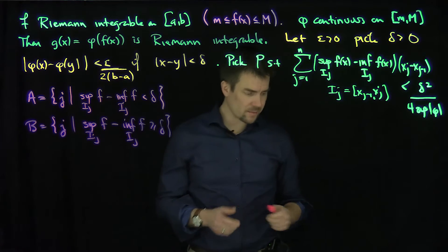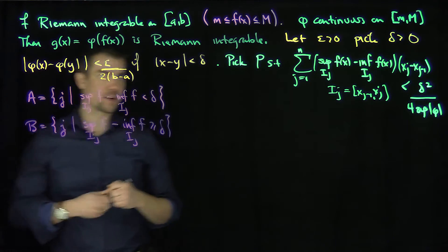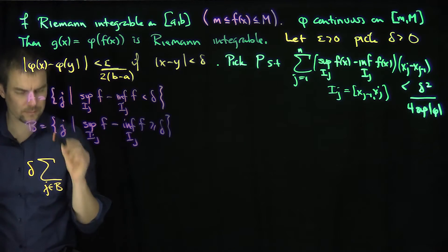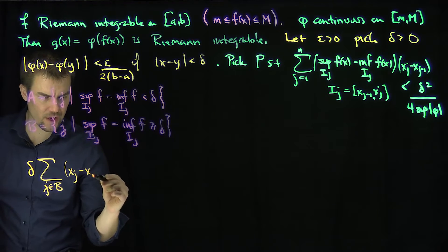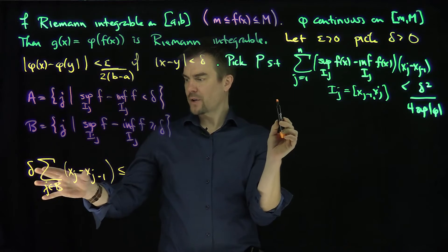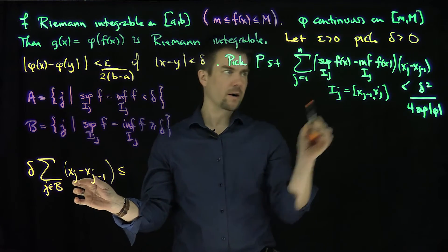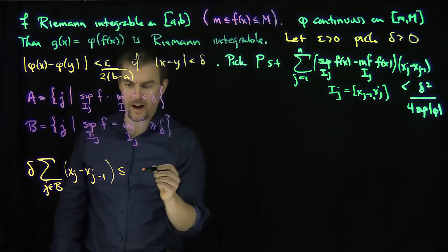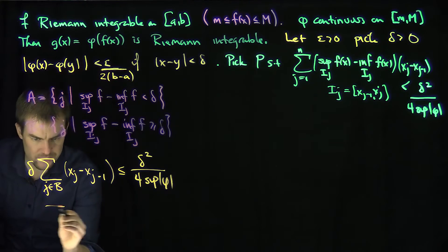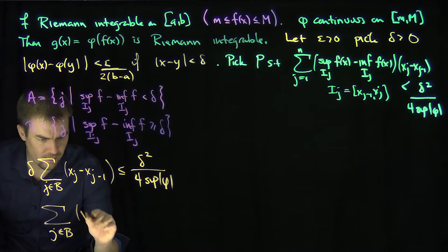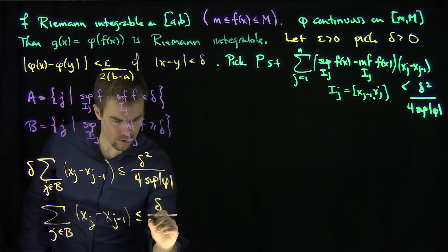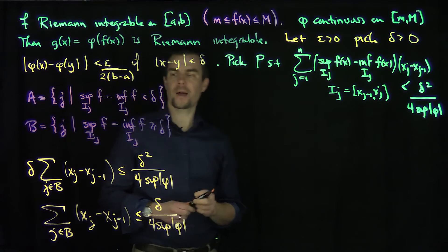Now I want to estimate the total length of set B. By our partition assumption, delta times the sum over j in B of (x_j - x_{j-1}) can be majorized by replacing delta with the sup minus inf, giving us the full sum which is less than delta squared over 4 times sup|phi|. Therefore the sum over j in B of (x_j - x_{j-1}) is less than or equal to delta over (4 times sup|phi|).